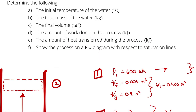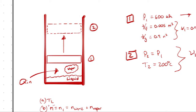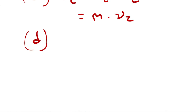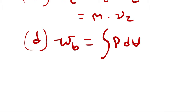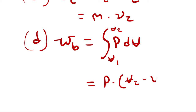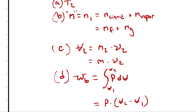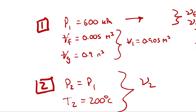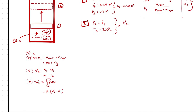For part D, I want the total work done. We only have one type of work — boundary work. The total boundary work is the integral of pressure with respect to volume. Since pressure is constant (isobaric process), this simplifies to pressure times the integral of dV from V1 to V2, which is just pressure times (V2 minus V1). This can also be written as mass times (specific volume 2 minus specific volume 1) times pressure, but since I already know total volumes, I'll leave it as pressure times (V2 minus V1).